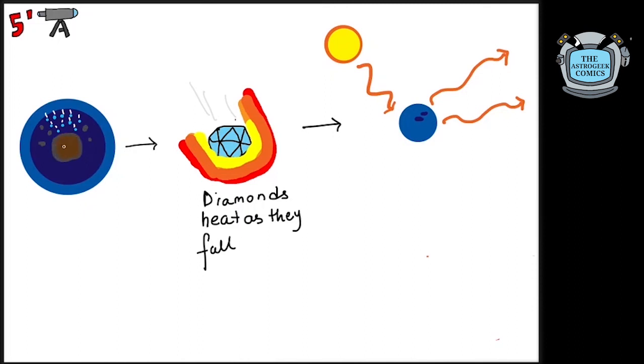The raining down carbon in other forms like graphite is also responsible for generating electric currents which are responsible for the non-polar magnetic fields of the ice giants.